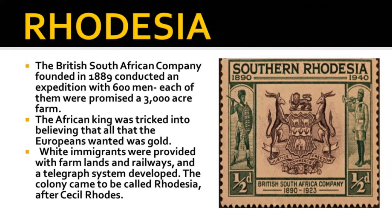The British South African Company, founded in 1889, conducted an expedition with 600 men, each promised a 3,000-acre farm. The African king was tricked into believing the Europeans only wanted gold. During the next ten years, African opposition was crushed. White immigrants were provided with farmlands, and railways and a telegraph system were developed. The colony came to be called Rhodesia after Cecil Rhodes.